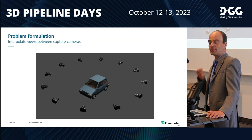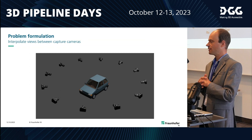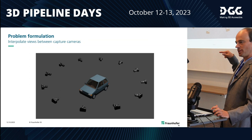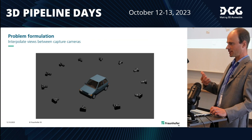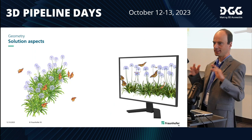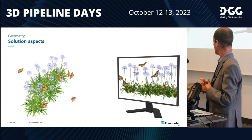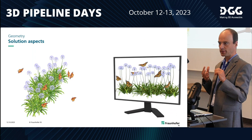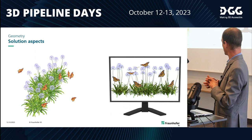The task we have is: we have an object or a scene, we capture a number of photos, and then we need to interpolate between these views so that you can virtually walk to a position where you don't have a photo but still create the right perspective. To do so, there are a couple of aspects you need to solve. The first one is obviously you need some form of 3D information — you need motion parallax, and you need to know where objects or object parts are located.